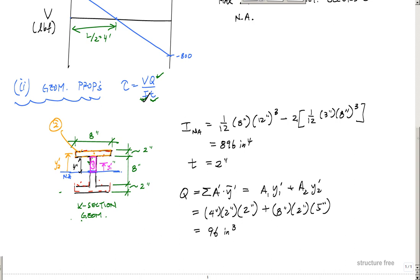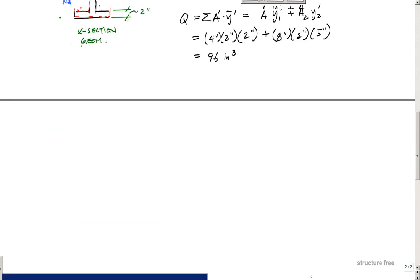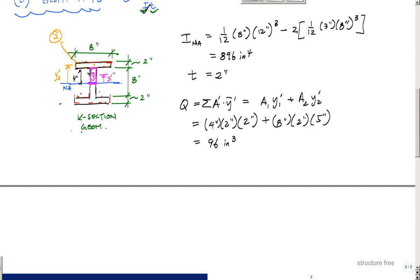Once I've got all that, everything now is just a straight up plug and chug. This would be part three: plug and chug. Apply tau equals VQ over It. Tau max is equal to the shear at that location, which was 800 pounds, times Q, 96 inches cubed, over the moment of inertia, which is 896 inches to the fourth, times t, 2 inches.